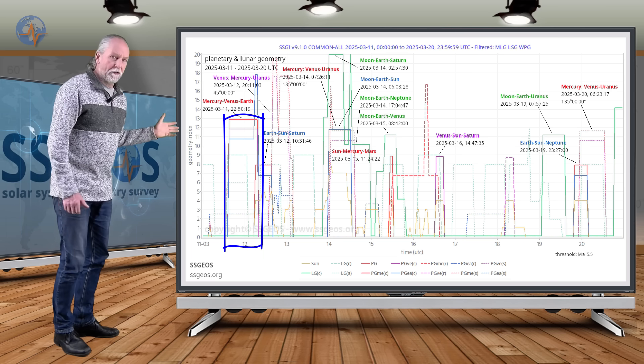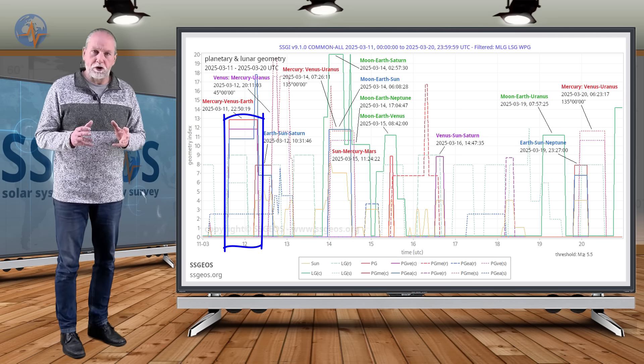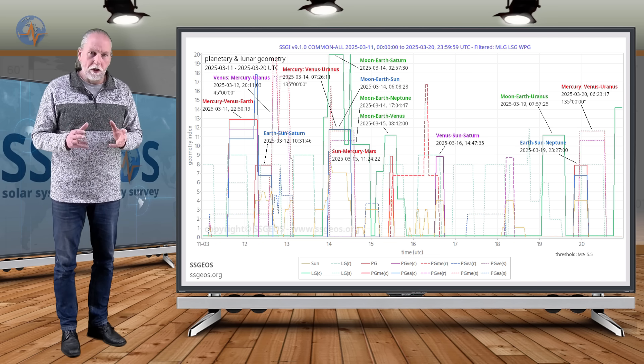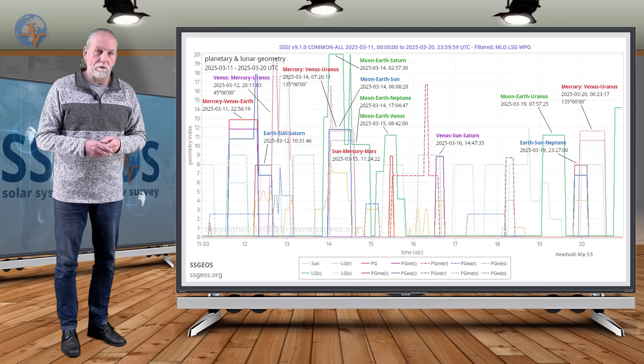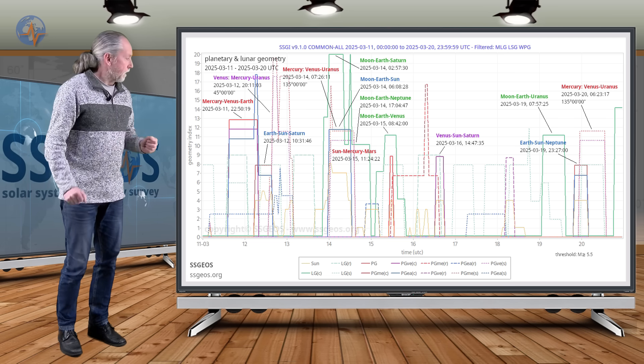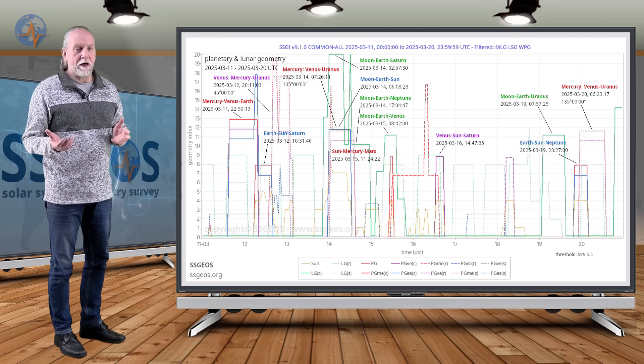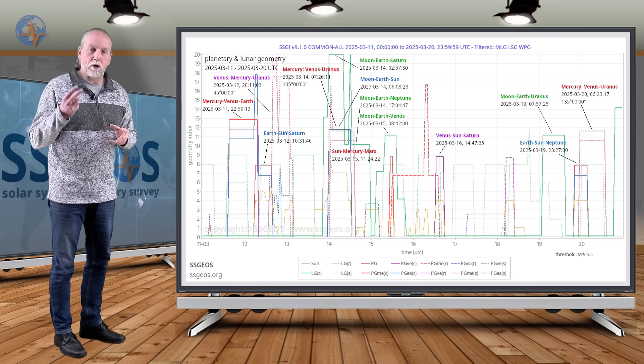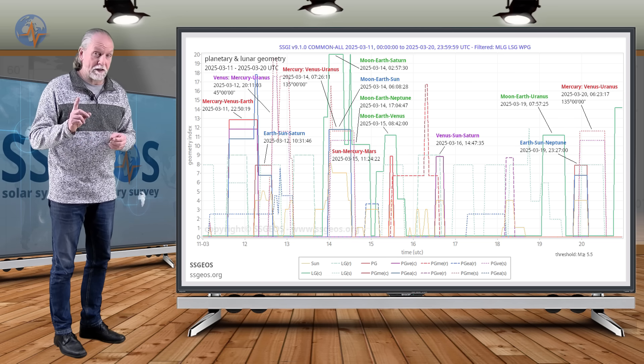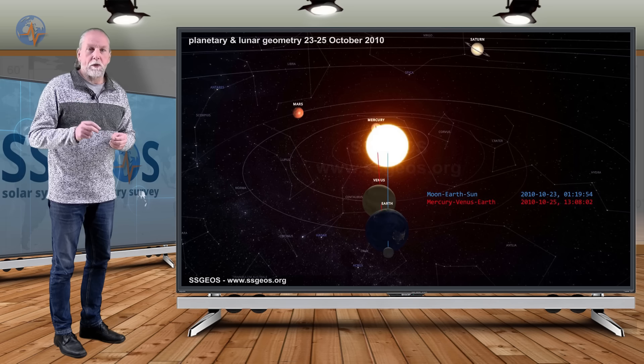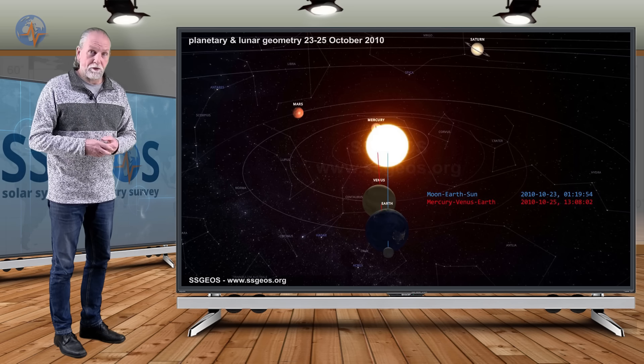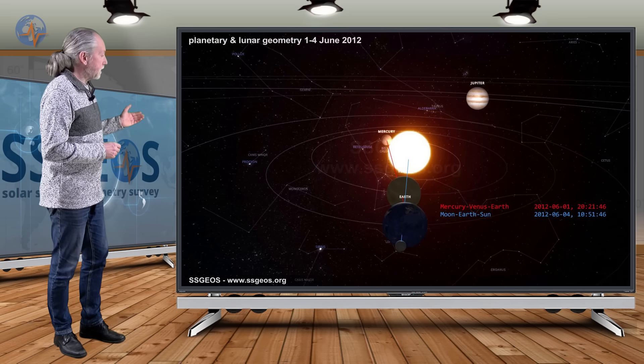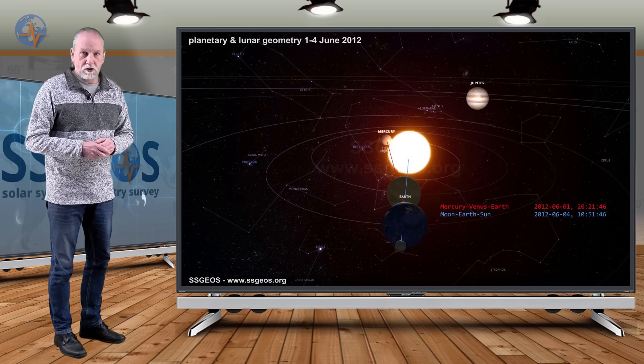The interesting thing is that it converges with full moon because in a few days we're going to have full moon. It's a tight convergence. And if you look at the last 25 years, that planetary and lunar geometry in a convergence happened only two times in the last 25 years. That was in October 2010, which resulted in a 7.7 earthquake in Indonesia, and in June 2012.